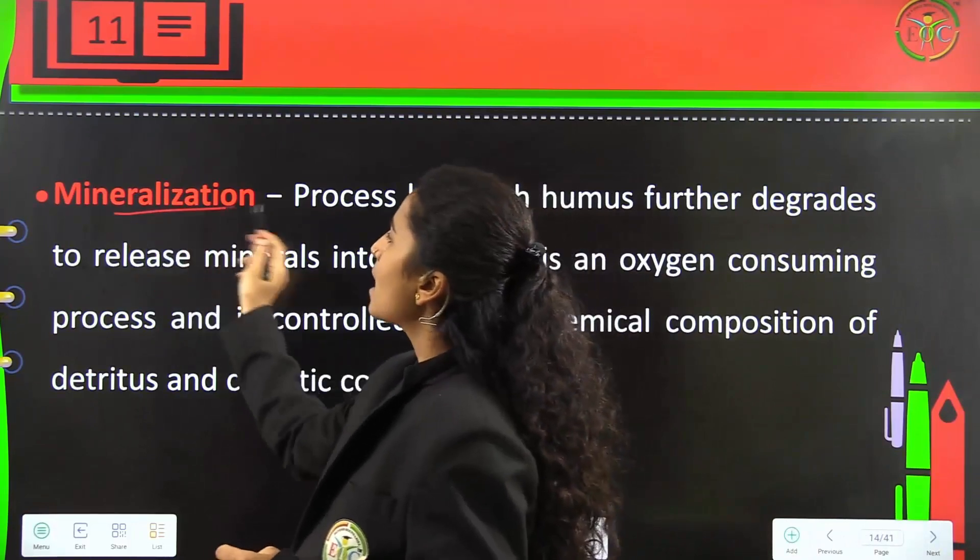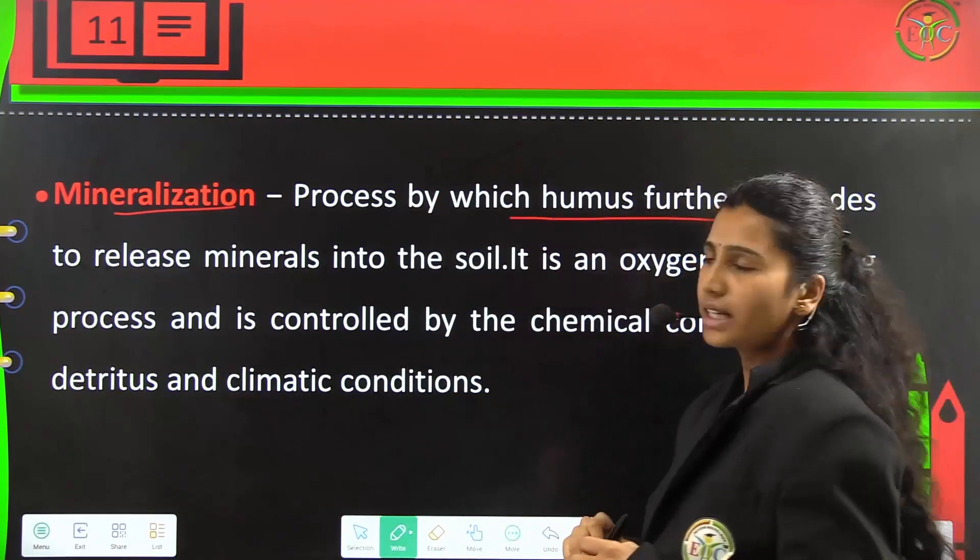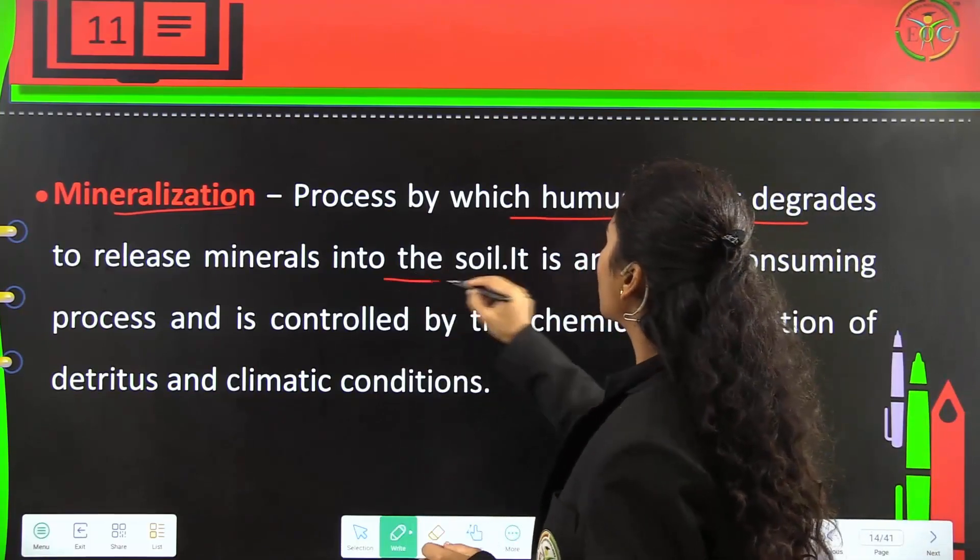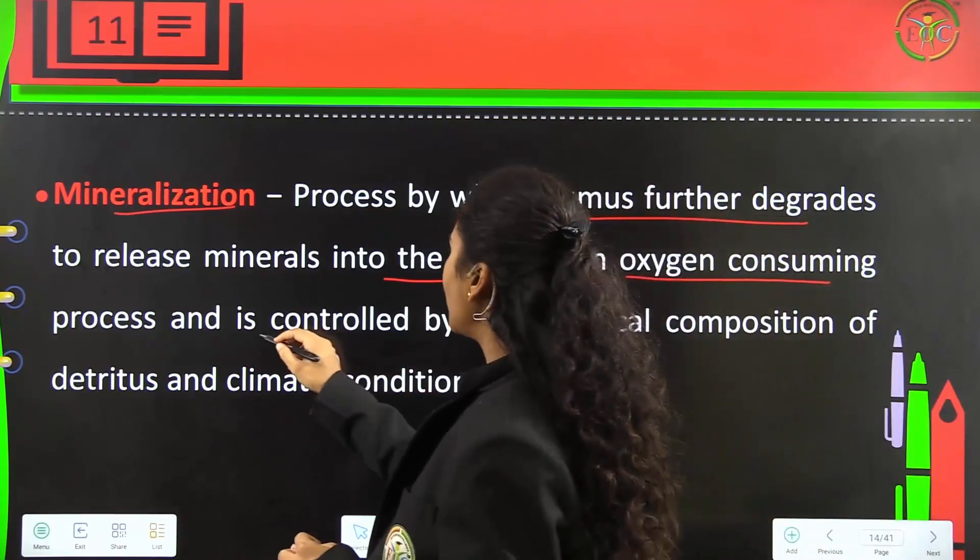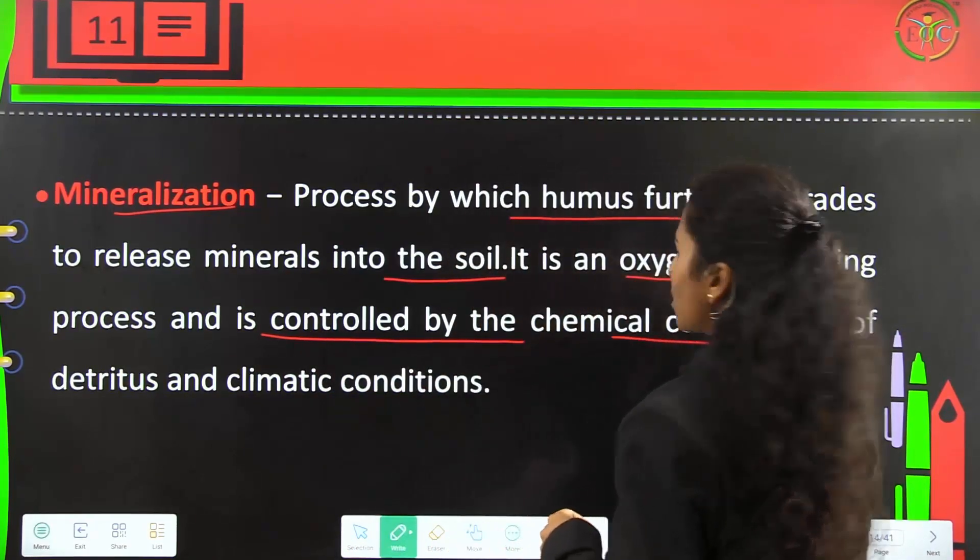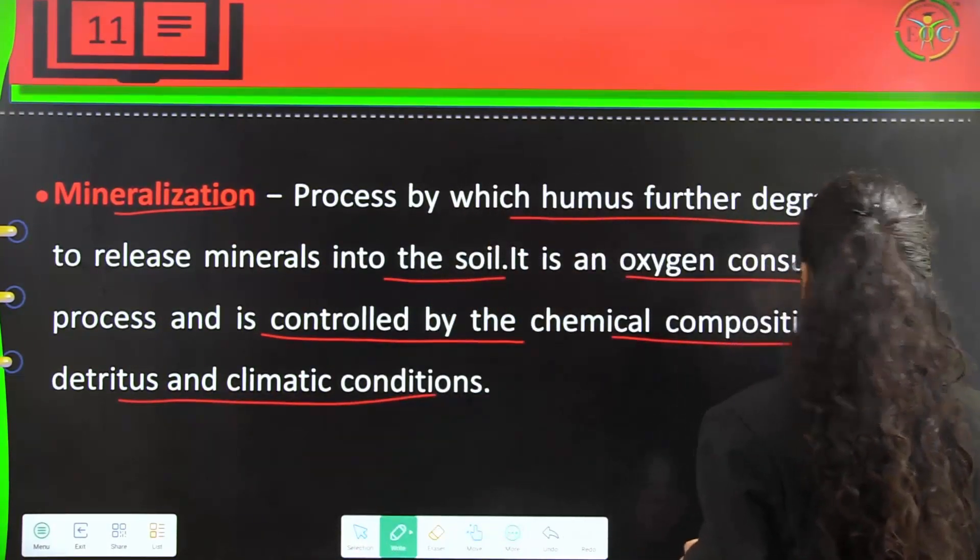Mineralization is the process by which humus further degrades to release minerals into soil. It is an oxygen-consuming process controlled by chemical composition of detritus and climatic conditions.